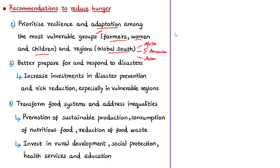The second recommendation is to better prepare for and respond to disasters. Donors and governments must increase investments in disaster prevention and risk reduction, especially in regions prone to extreme weather events. Actions include investing in early warning and response systems, giving adequate funding to tackle food crises, and investing in resilience building to prevent conflicts over natural resources like water and land. The third recommendation is to transform food systems and address inequalities through sustainable production, nutritious food consumption, reduction of food loss and waste, and investment in rural development, social protection, health, and education.